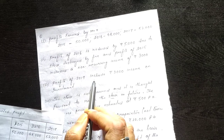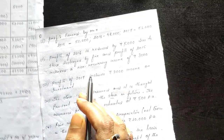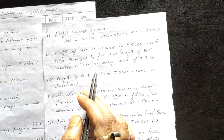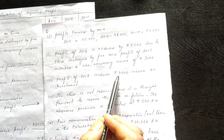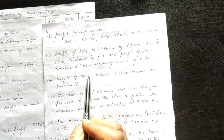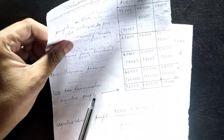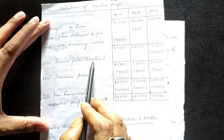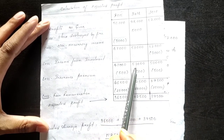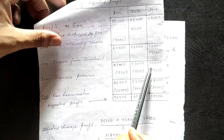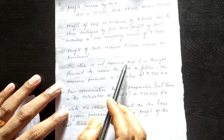Next: profit of 2017 includes 2,000 income on investment, which is non-recurring income and not a business income. So this amount is deducted from 2017's profit. I wrote: less income from investment — 2,000 from 2017. After subtraction, 2017 gives 50,000.